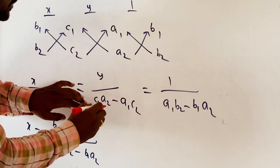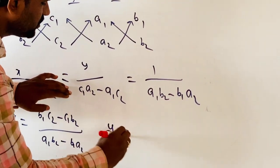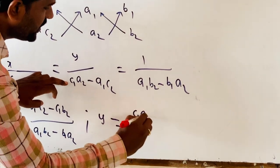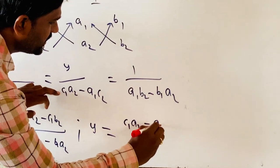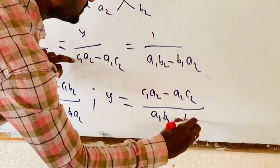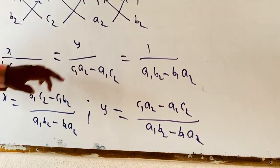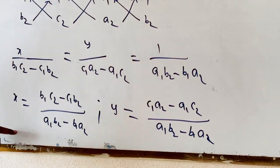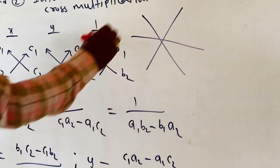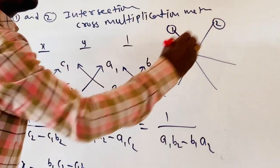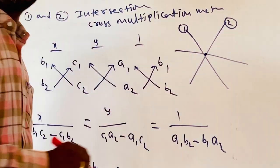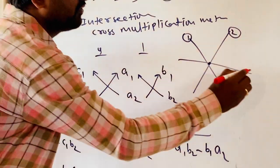Since three lines are intersecting, the point of intersection of equations 1 and 2 must also lie on the third equation. That means these X and Y values also lie on the third equation. By substituting X and Y values into equation 3, which is A3·X + B3·Y + C3 = 0.